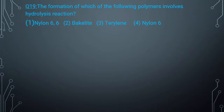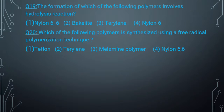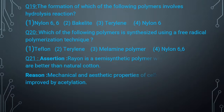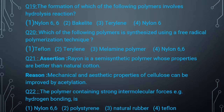Homework question 1: The formation of which of the following polymer involves hydrolysis reaction? Question 2: Which of the following polymer is synthesized using free radical polymerization? Question 3: Rayon is a semisynthetic polymer whose properties are better than natural cotton - mechanical and aesthetic properties of cellulose can be improved by acetylation. Question 4: Polymer containing strong intermolecular forces, example hydrogen bonding, is which type of polymer?